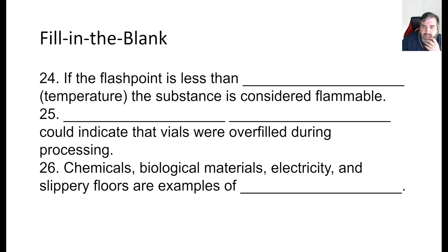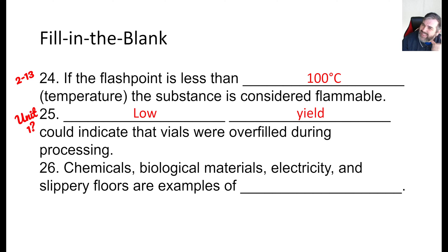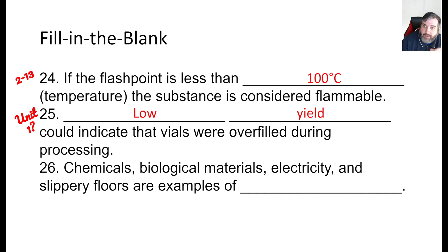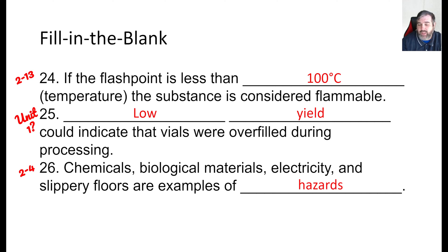If the flashpoint is less than 100 degrees Celsius, then the substance is considered flammable. Low yield can indicate that vials were overfilled during processing — and honestly I think this is a leftover question from Unit 1 that got reused. Chemicals, biological materials, electricity, and slippery floors are all examples of hazards — things that could potentially cause an accident at work. You can find that near the beginning of the unit on page 4.